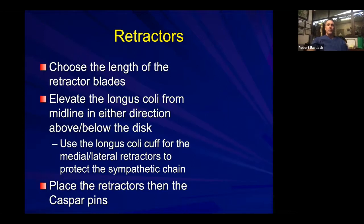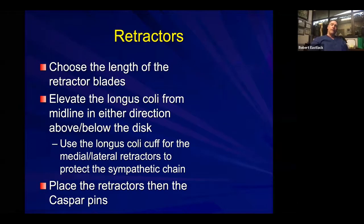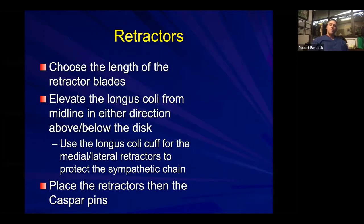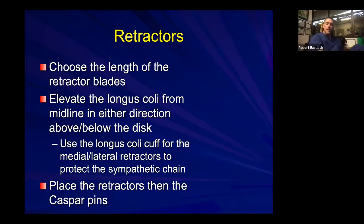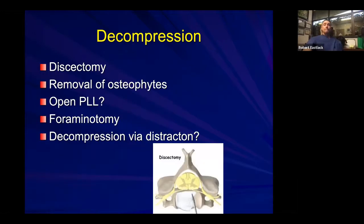Once you've confirmed the level, begin elevating the longus colli from the midline, moving in either direction above and below the disc, creating a cuff with the longus colli and tendon to allow your medial-lateral retractors to hook under that cuff. This gives a good foothold to keep things centered over the disc space, but also practically protects the sympathetic chain, which runs along the lateral aspect of the longus colli. If you fall out of the longus colli as you work, conscientiously replace your medial-lateral retractors under it. Then place your caspar pins.